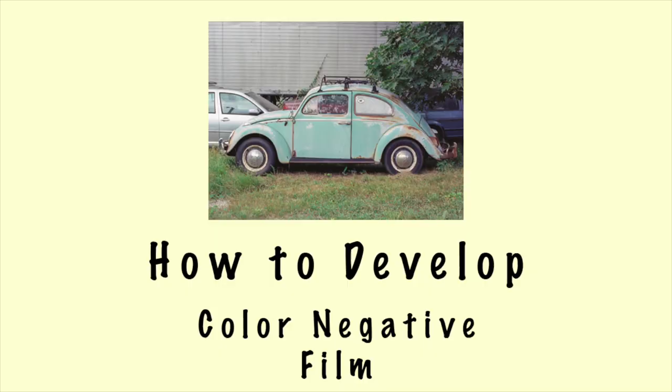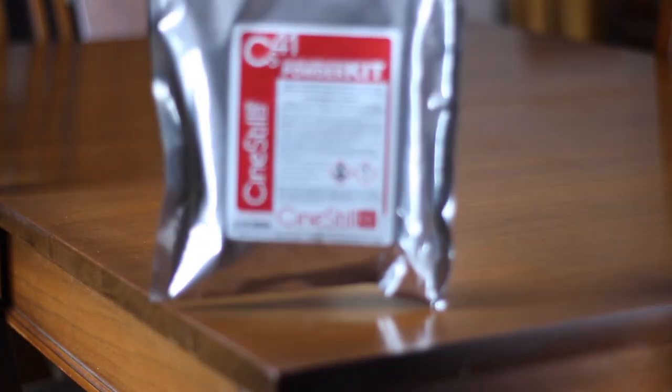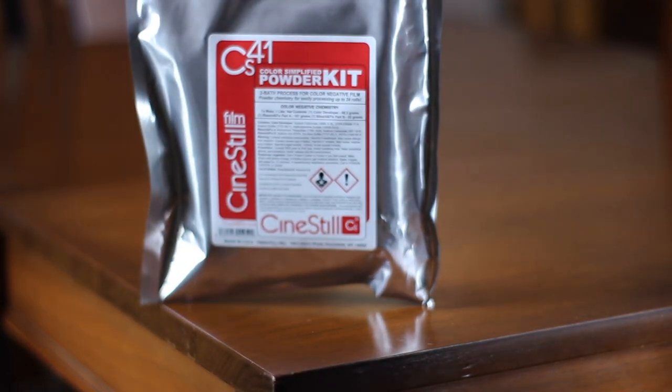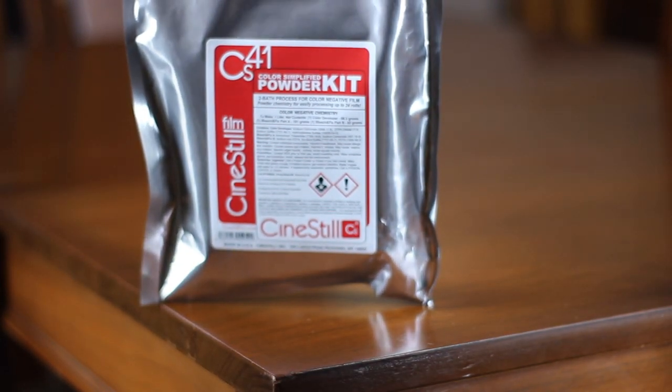Hey guys, Sam here. Welcome to another YouTube video. Today we're going to be talking about developing your own color negative film at home, discussing the different things that you're going to need. First and foremost, I am using the CineStill C41 color negative development kit. This will give you both the developer as well as the blix.